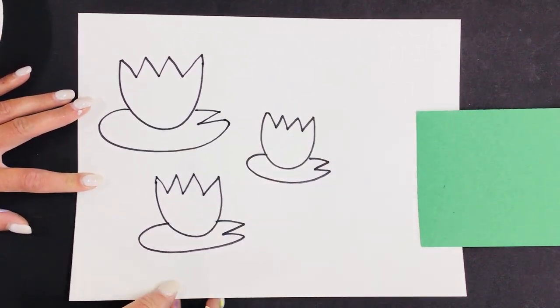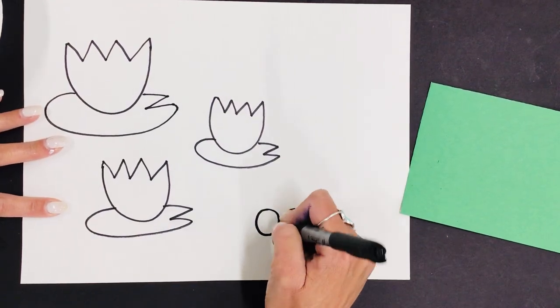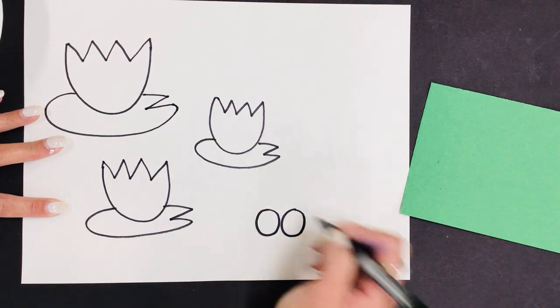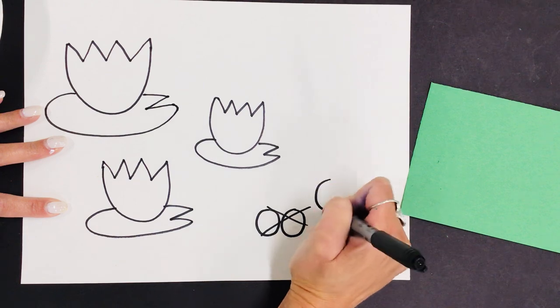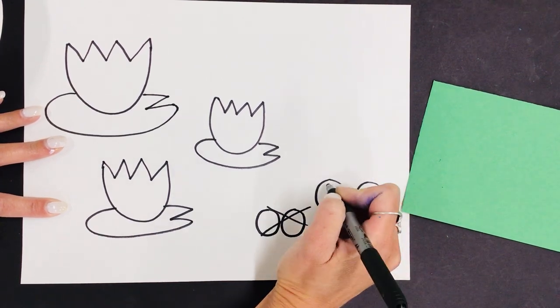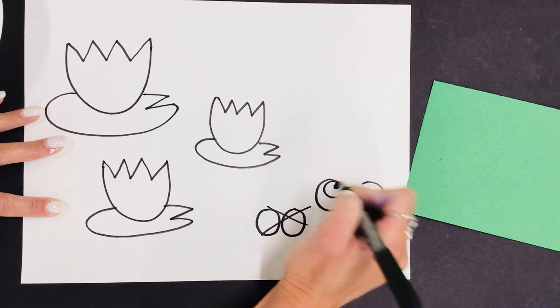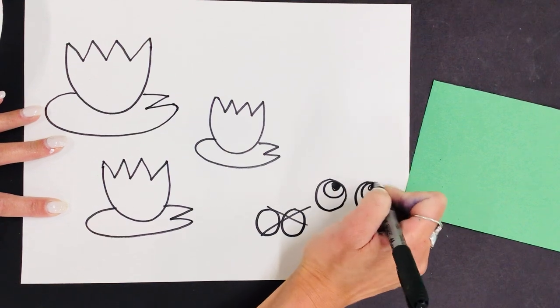And then the other thing we're gonna draw on this white paper are the eyes for our frogs. You're just gonna draw two circles and we are gonna cut these out. So maybe you might want to make them a little farther apart. Learn from my mistake so that I can cut these out. And then I like to draw the iris of the eye and the pupil. You can decide which direction your frog is gonna be looking.